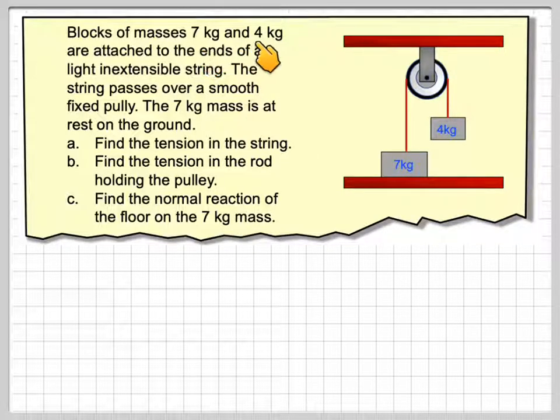Blocks of masses 7kg and 4kg are attached to the ends of a light, inextensible string. So we've got a light, inextensible string here. One end, we've got 4kg, and then we've got another one, 7kg, which is on the ground.